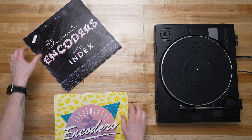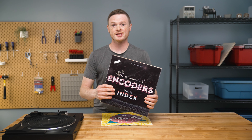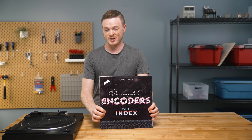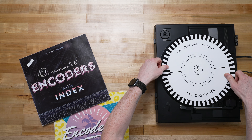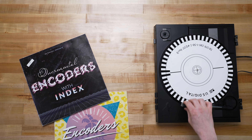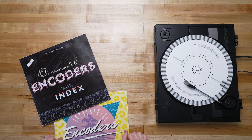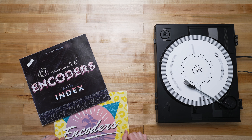To know exact position, you need a unique spot on the disk that looks different than anything else, and we call that an index. An index is a unique spot on the disk that can be used as a homing position after the power is lost and restored.